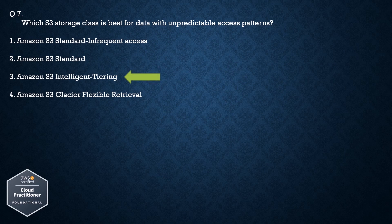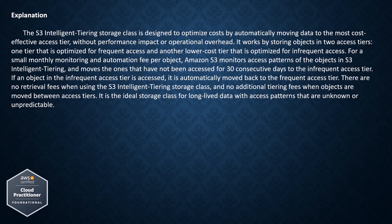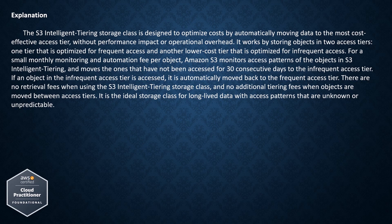The correct answer is Amazon S3 Intelligent Tiering. Explanation: The S3 Intelligent Tiering storage class is designed to optimize costs by automatically moving data to the most cost-effective access tier, without performance impact or operational overhead. It works by storing objects in two access tiers — one optimized for frequent access and another lower-cost tier optimized for infrequent access. For a small monthly monitoring and automation fee per object, Amazon S3 monitors access patterns and moves objects that have not been accessed for 30 consecutive days to the infrequent access tier.